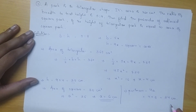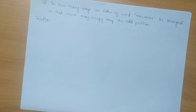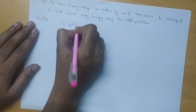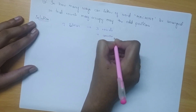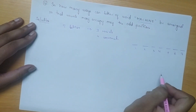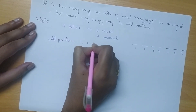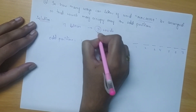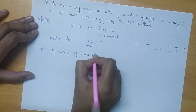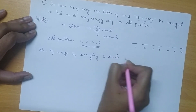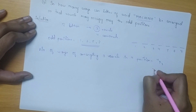In how many ways can the letters of the word MACHINE be arranged so that vowels may occupy only the odd positions? In the word MACHINE we have 7 letters, in which there are 3 vowels and 4 consonants. We have to arrange them such that vowels occupy only odd positions. The odd positions are 1, 3, 5 and 7, so there are 4 available positions for 3 vowels. The number of ways of arranging 3 vowels in 4 positions is 4P3, which equals 24.